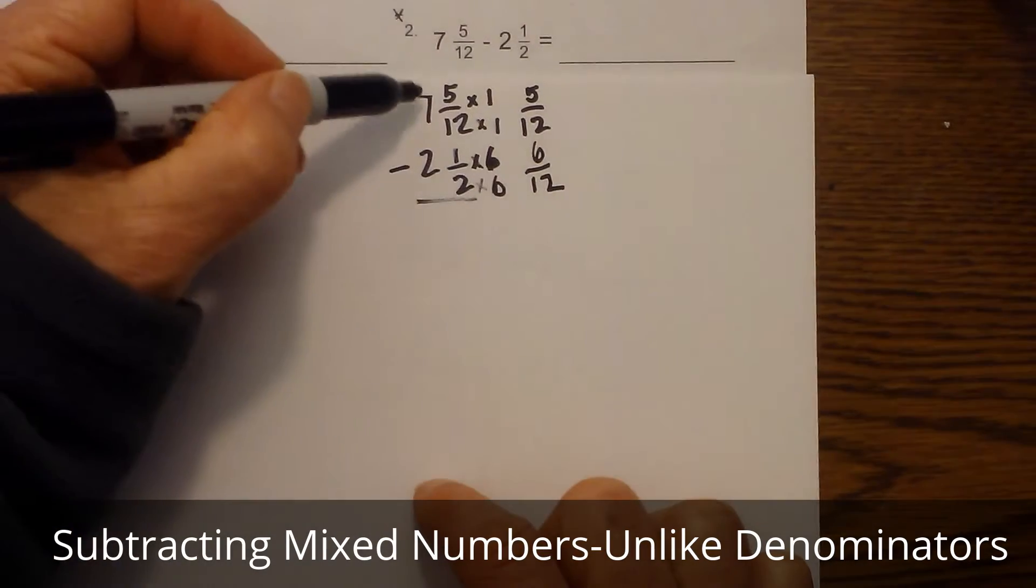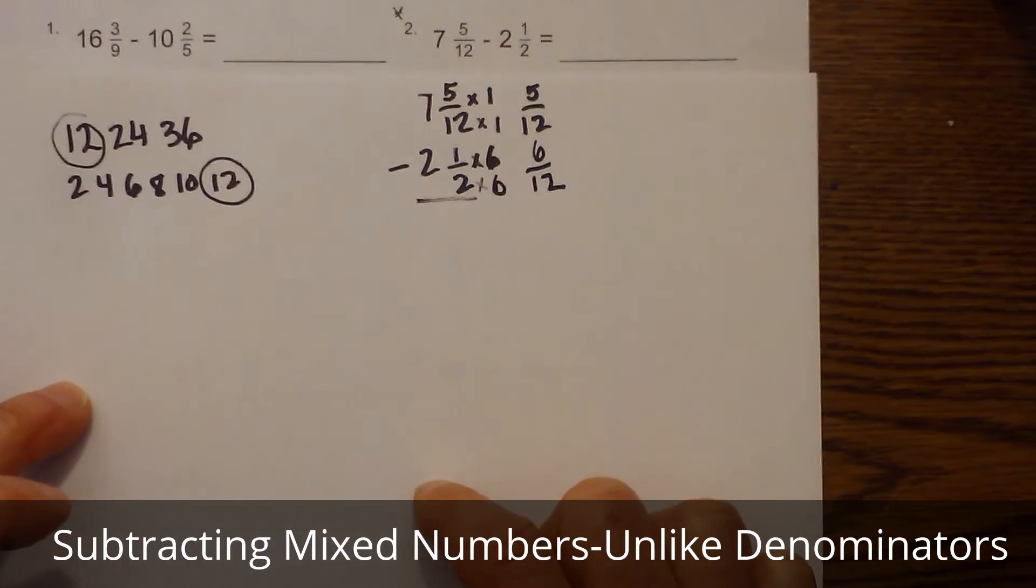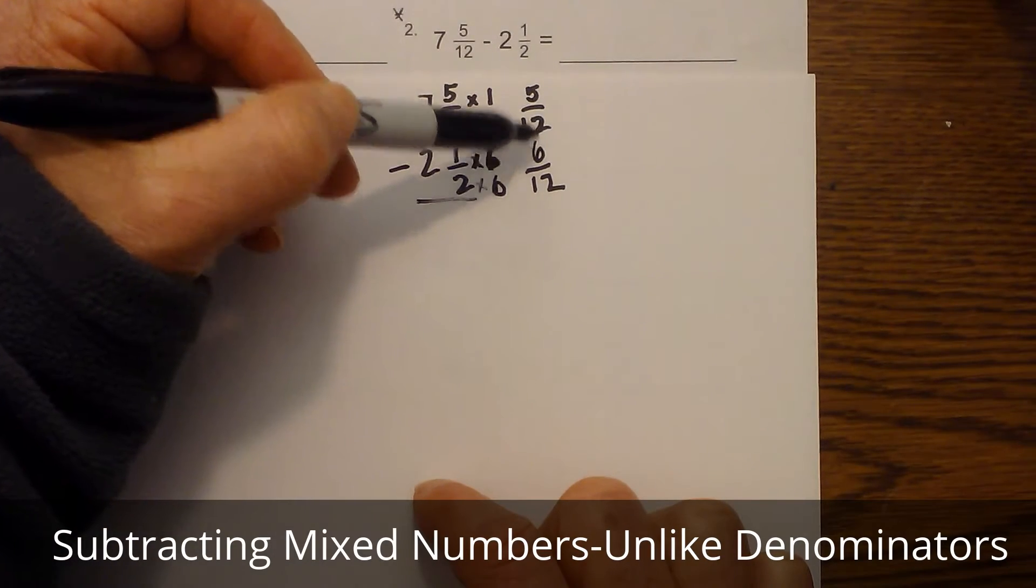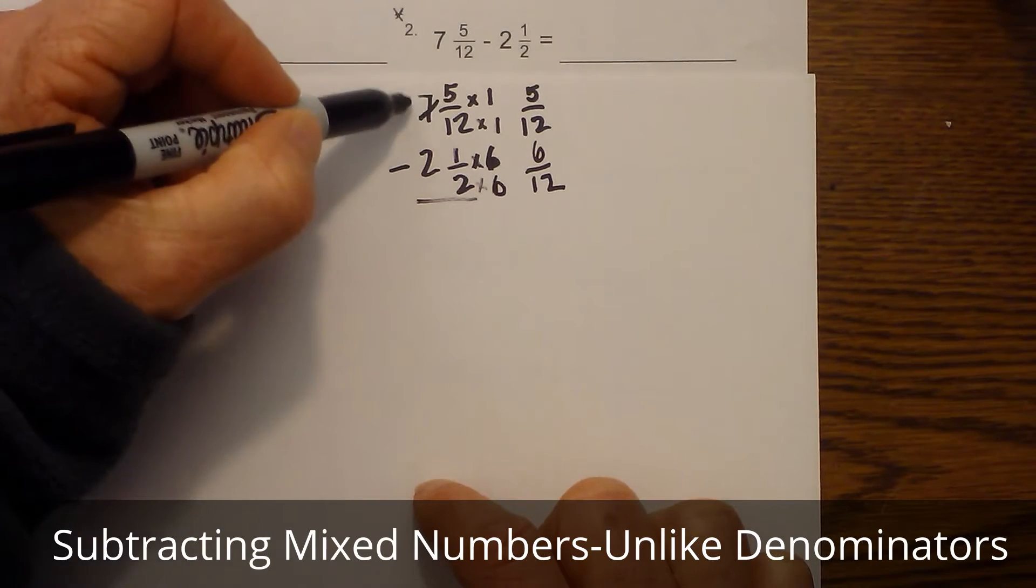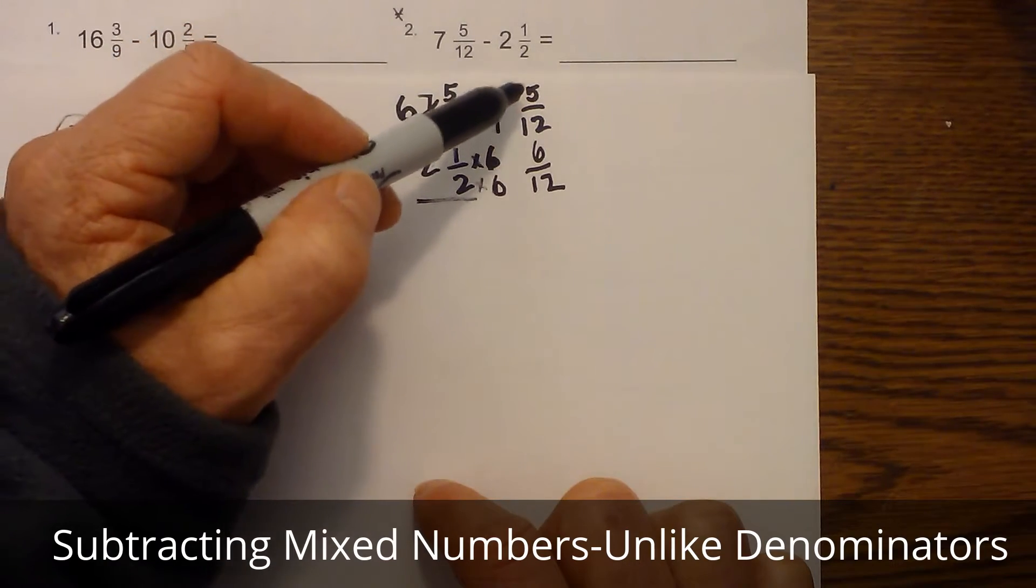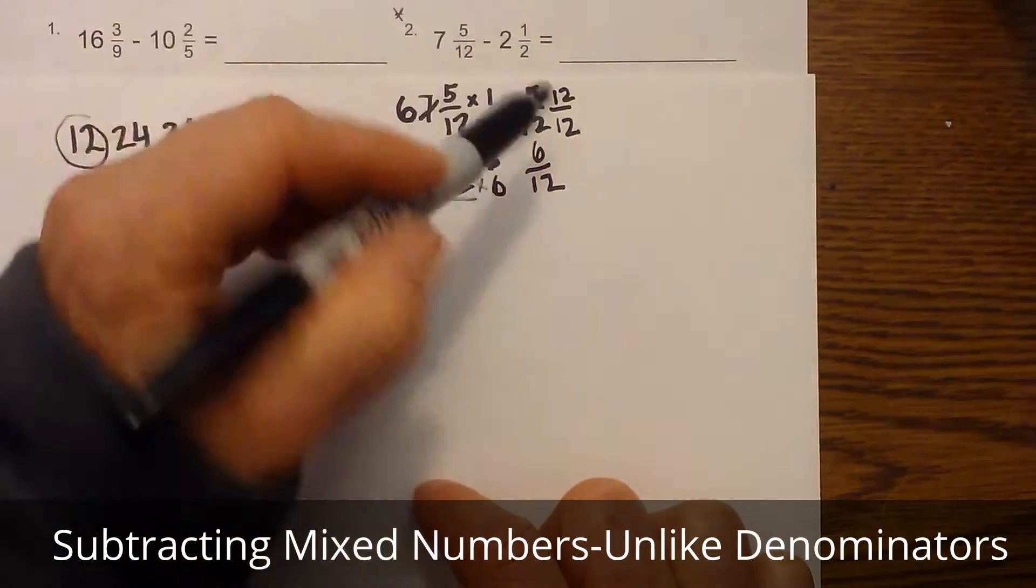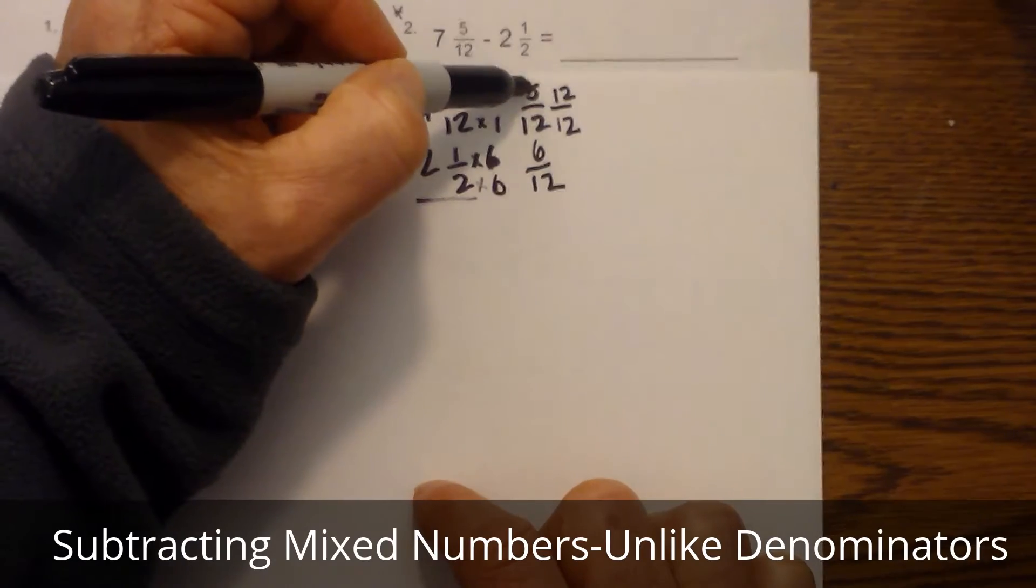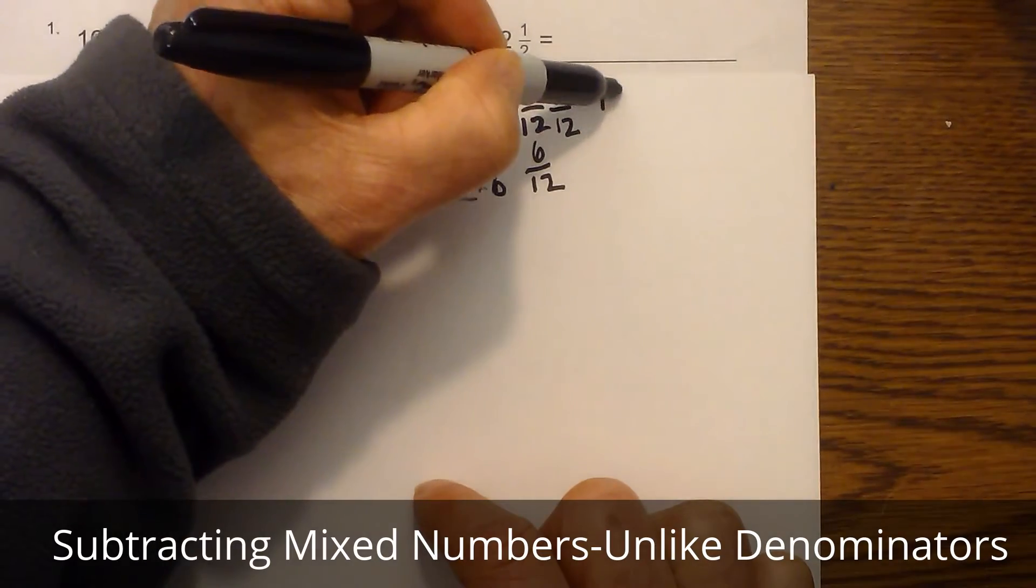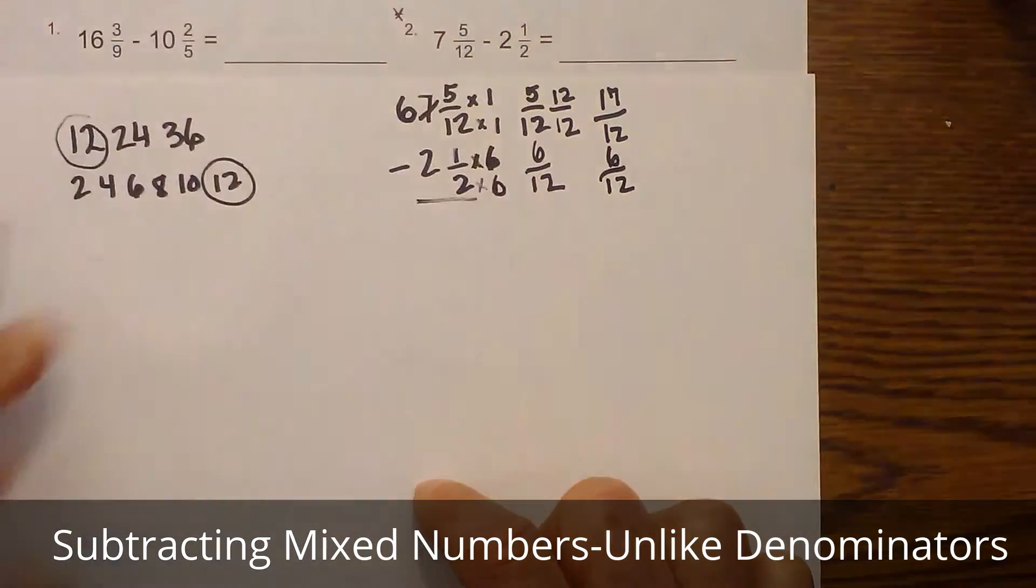Okay, so now I have seven and five twelfths minus two and six twelfths, but I have another challenge. The five is smaller than the six, so what should I do? I can borrow one from this seven, so the seven becomes a six. And I'm going to add one to five twelfths, and the way I'm going to add one is I'm going to take the denominator and place it over itself, so twelve over twelve, because twelve over twelve is one. And then I simply add five plus twelve, and that becomes seventeen over twelve minus six over twelve.